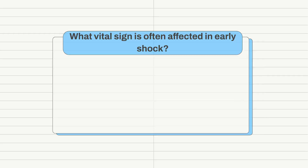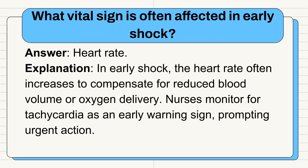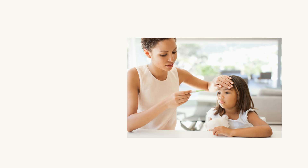Question 8: What vital sign is often affected first in early shock? Answer: Heart rate. In early shock, the heart rate often increases to compensate for reduced blood volume or oxygen delivery. Nurses monitor for tachycardia as an early warning sign, prompting urgent action.